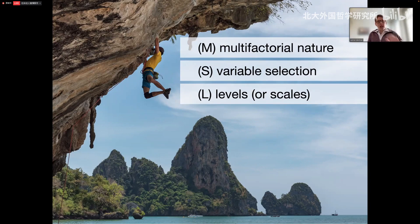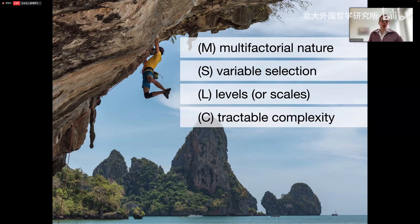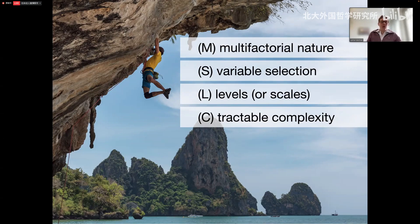Related to these three challenges is the challenge of complexity — devising a model that has tractable complexity. How complex can a model be while it still stays tractable but still delivers meaningful insights? How can we accommodate for having this multifactorial nature while also meeting the requirement of clinical applicability? Likely the answer to this complexity challenge will go hand in hand with answers to variable selection and levels.